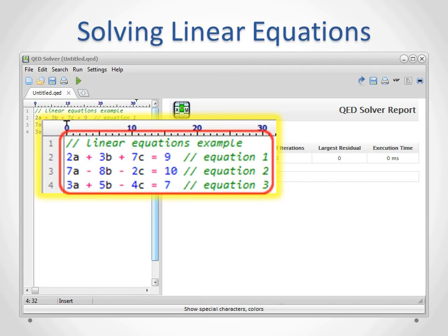Note the highlighted syntax to make things as clear as possible. Equations are written just as you would write them on a piece of paper. The unknown variables in this problem are A, B and C.